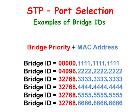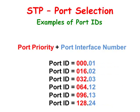Let's take a look at some of the terms. The bridge ID is composed of the bridge priority and the MAC address. The network administrator can modify the value of the bridge priority in order to change the spanning tree topology at the switch level. The default value is 32,768. The port ID is composed of the port priority and the interface port number. The network administrator can change the port priority value in order to modify the topology at the port interface level.